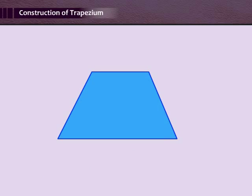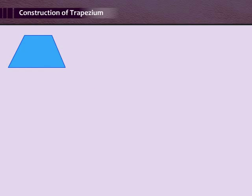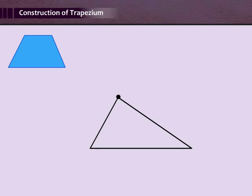Let us now learn the construction of a trapezium. Generally, to construct a trapezium, we take the parallel side with the greater measurement as the base, and on that base we construct a triangle with the given measurements such that the triangle lies between the parallel sides. The vertex opposite to the base of the triangle lies on the parallel side opposite to the base. We then draw a line through this vertex parallel to the base.